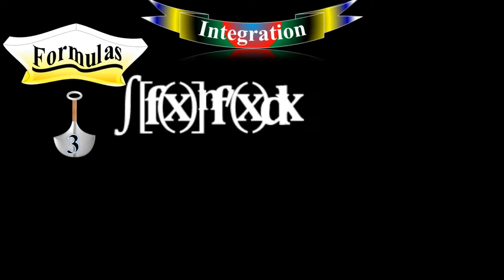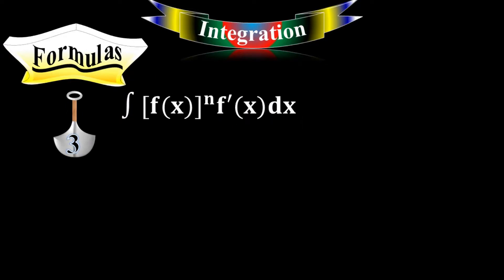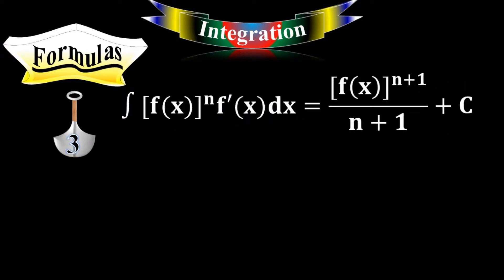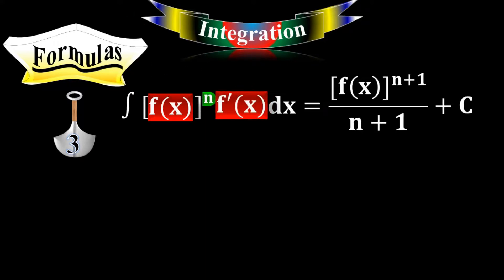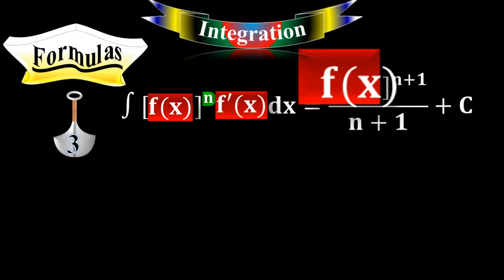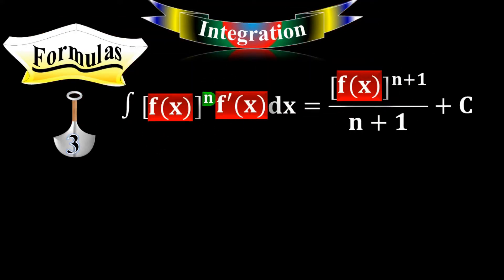Formula number three: the integral of f of x to the n times f prime of x dx — when you have a function f of x to the n times its derivative — it equals f of x to the n plus 1, over n plus 1, plus C.